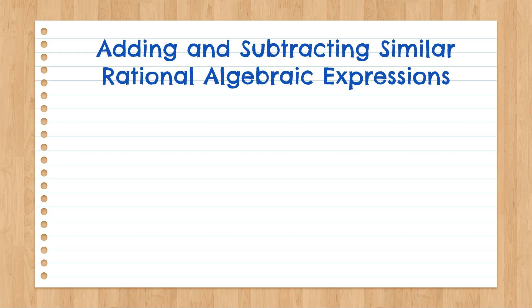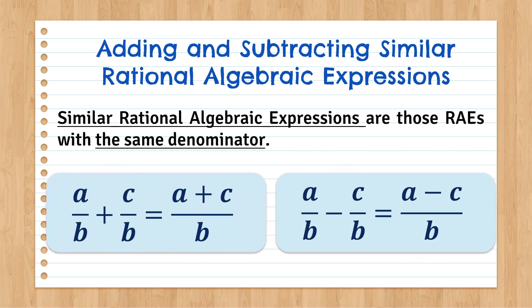Before we proceed in identifying the steps in adding and subtracting similar Rational Algebraic Expressions, let us know first what are similar Rational Algebraic Expressions. Similar RAEs are those RAEs with the same denominator. As you can see in the symbol here, all of the denominators are the same, from the given up to the sum and difference.